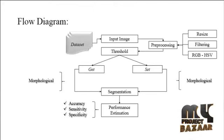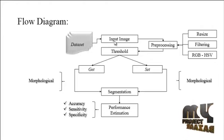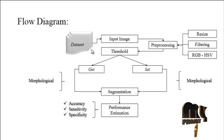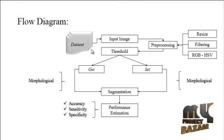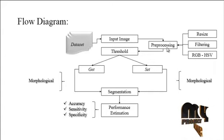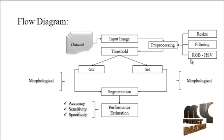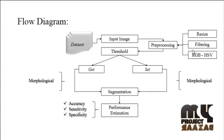Now we are going to discuss the flow diagram for the process. This is the overall working flow. First, the input image is taken from the dataset — a folder consisting of several rust images. After getting an image from the dataset, it undergoes pre-processing. There are three steps: first, image resize; second, image noise filtering; and third, RGB to HSV color transformation.